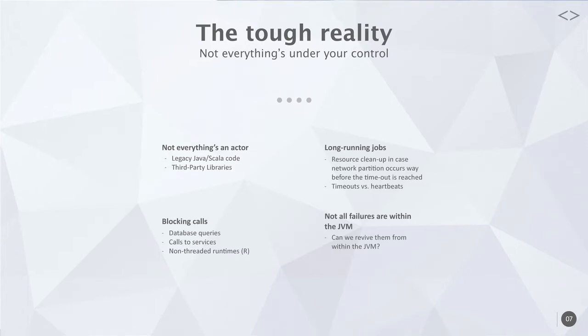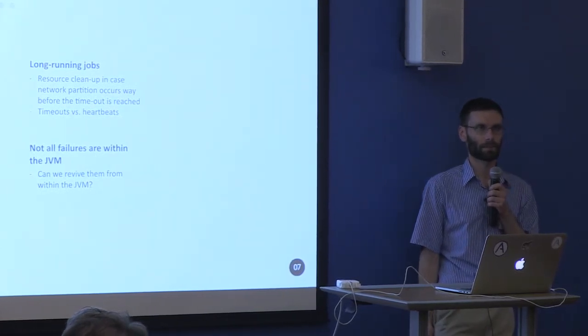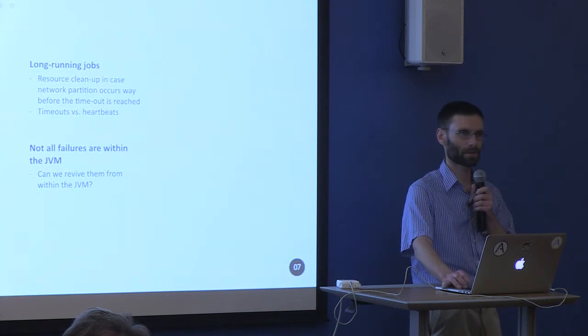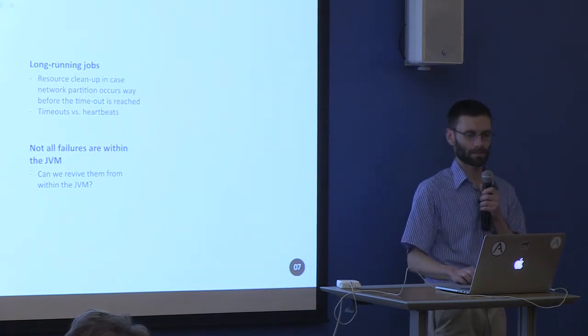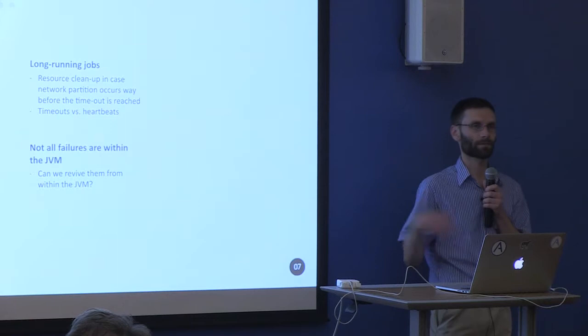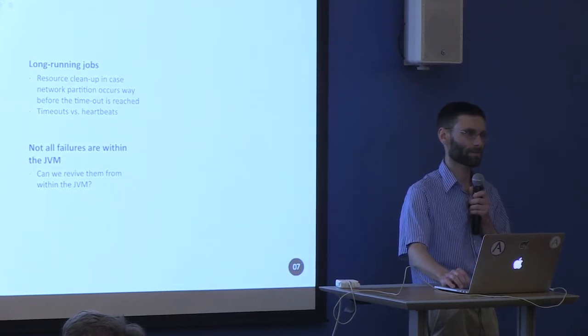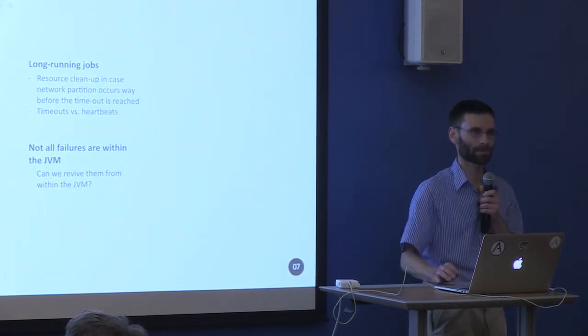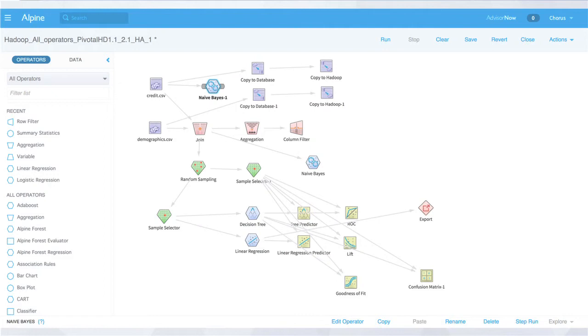Not all failures happen within the JVM. In this particular case it's possible to restart external processes, and that's why Akka's supervision is really great — because once the failure is detected, you can actually use the Java client to fork a new R process. In general, there are lots of different problems to deal with when integrating with other technologies. Integrating Akka with R felt a little bit like integrating J2EE back in the late 90s with System/360 — horrible, but it had to be done because there was business value there.